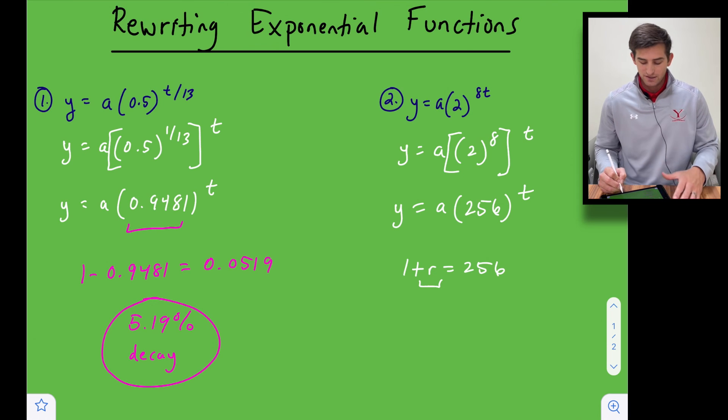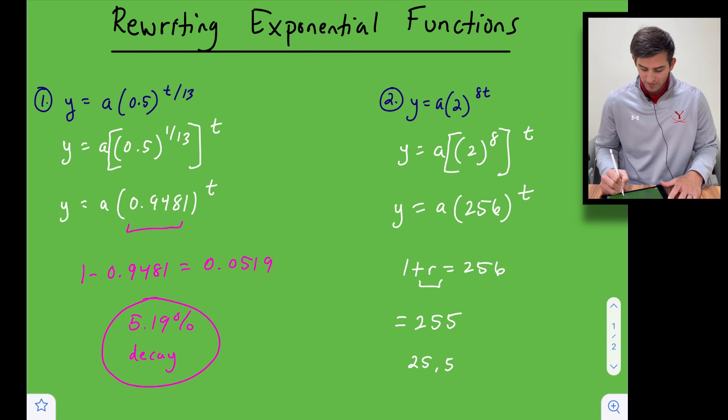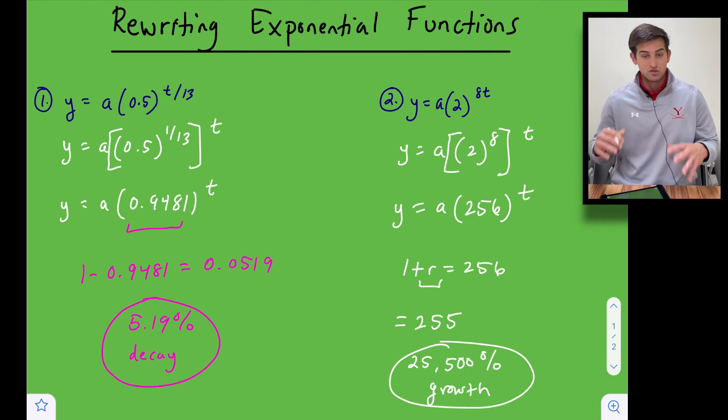And so now we're going to actually write that as a decimal and so we're going to move that decimal or excuse me as a percentage, so we're going to multiply by 100 and it's actually going to become 25,500 percent growth. Okay, so extremely large growth but that is what the equation is telling us. Okay and that is how you can rewrite some exponential functions.